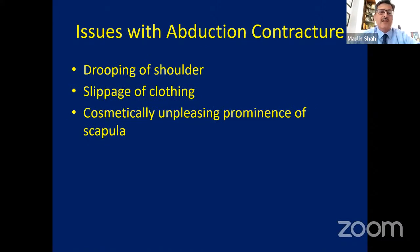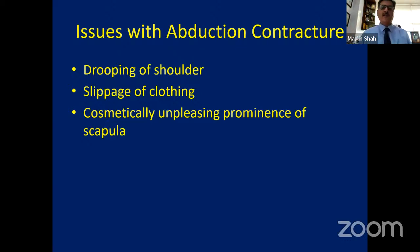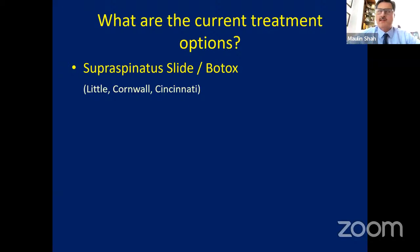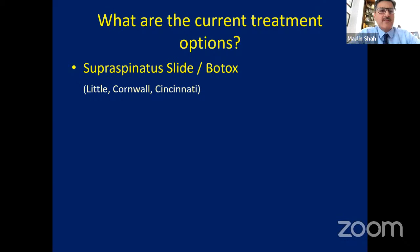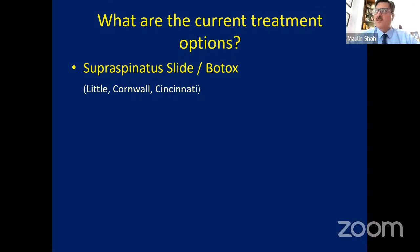How does abduction contracture affect clinical practice? Family always complains the shoulder is dropped, and parents ask the child to make the shoulder straight. When they do, they elevate the arm. Slippage of clothing is a problem and cosmetically it is highly unpleasing. Different surgeons globally have suggested different approaches: supraspinatus slide or Botox has been suggested from Cincinnati, but I have failed to correct the abduction contracture with this because there is not only muscle but also capsular contracture and bony deformities. Supraspinatus is a very important abductor and stabilizer, so sliding it may abnormally hamper shoulder function.